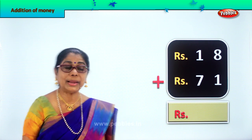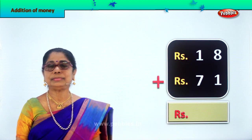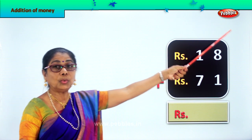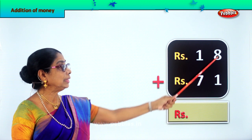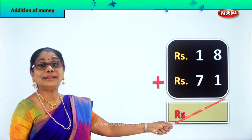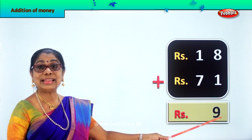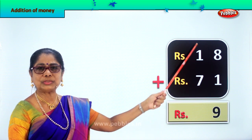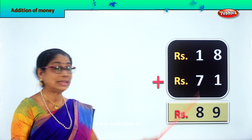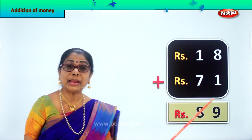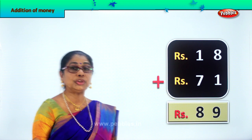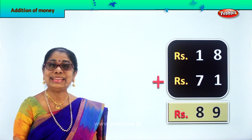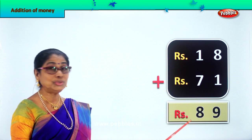You are given rupees 18 plus rupees 71. We need to add this. Rupees 18 plus rupees 71. Now let's go to the ones place first. 8 rupees plus 1 rupee. 8 plus 1, how many? 9. So we write 9. Now we go to the tens place: 1 plus 7. 7 plus 1 is 8. Rupees 18 plus rupees 71 is equal to rupees 89. Rupees 89 is your answer. Do you enjoy adding money? We are learning addition of money. I am sure it is very interesting.